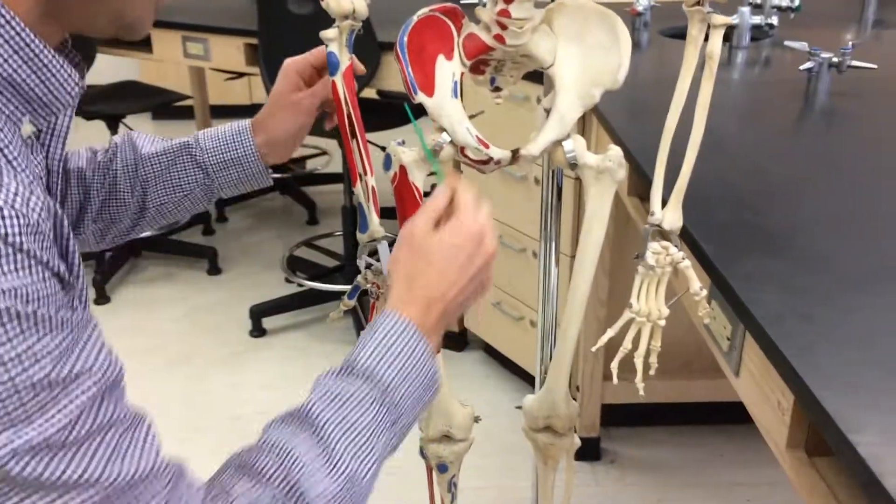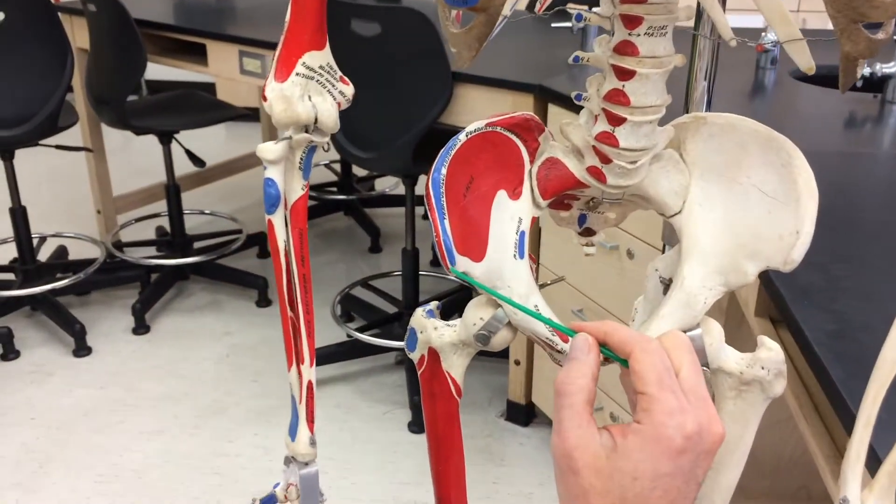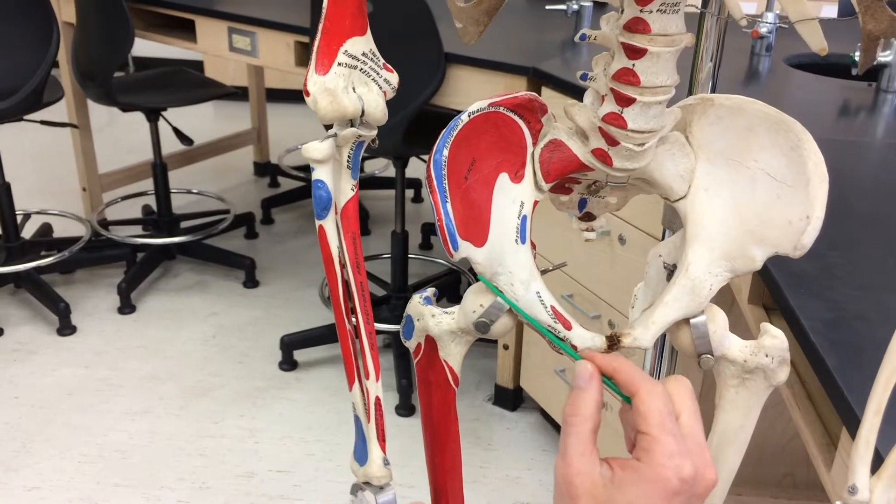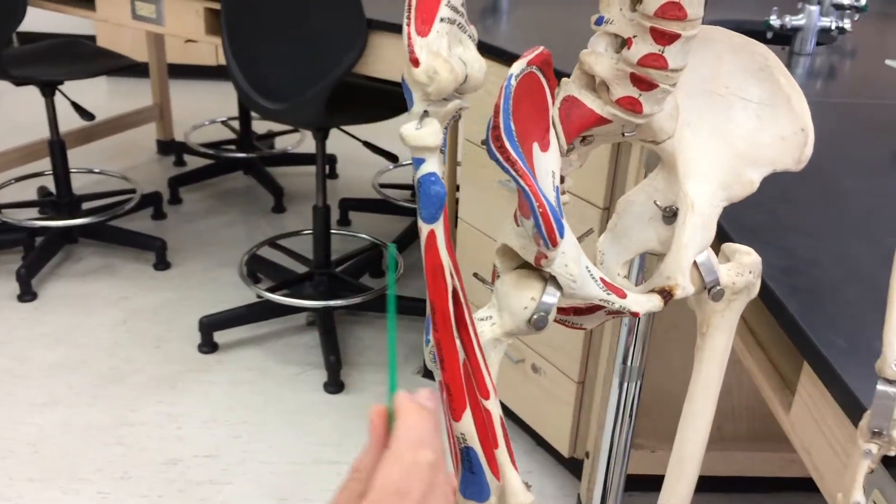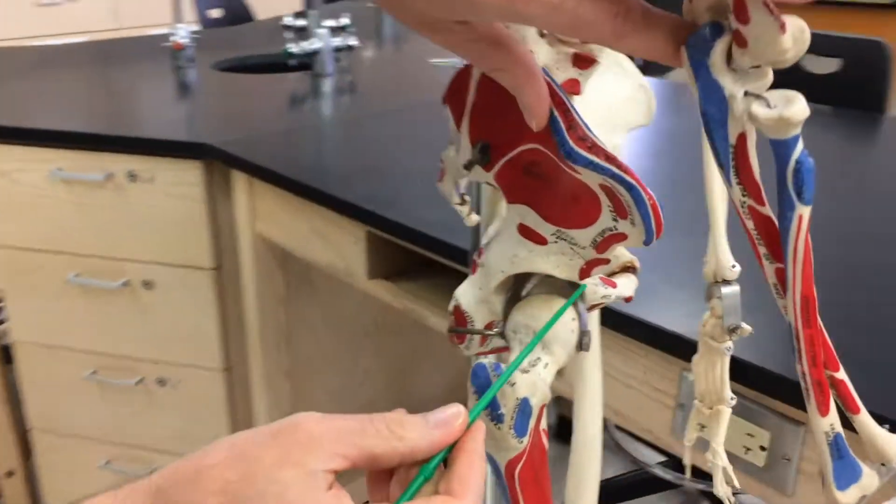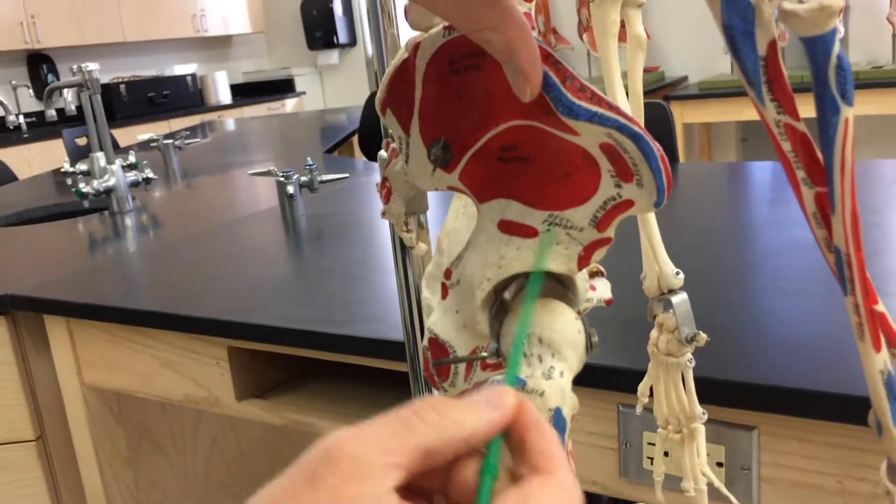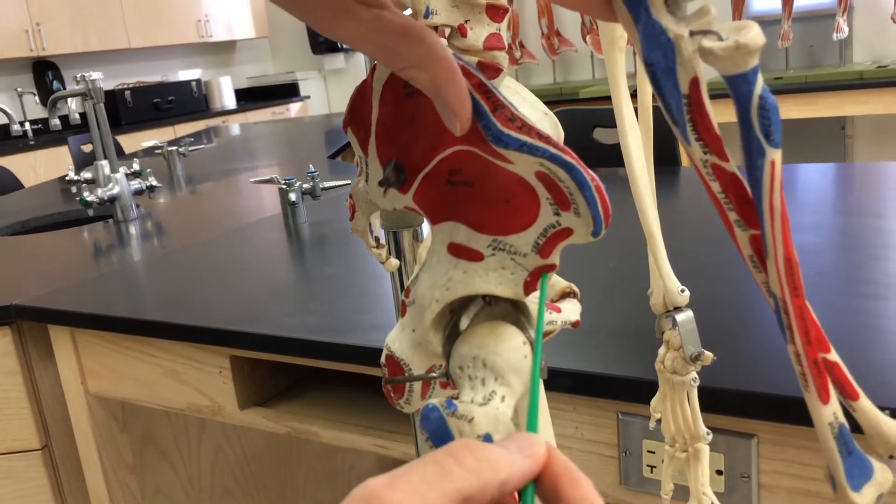If you look at the iliac crest, you'll come to the anterior superior iliac spine. Just inferior to that, you'll see the anterior inferior iliac spine. These red spots right here, this is where rectus femoris has its origin.